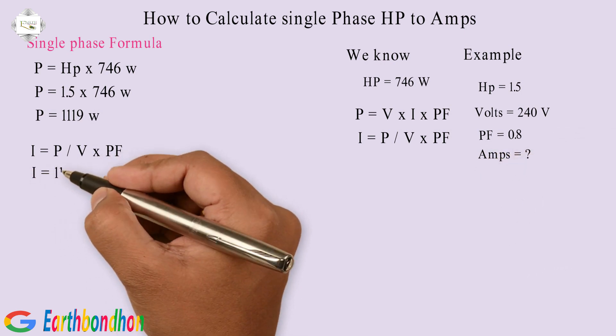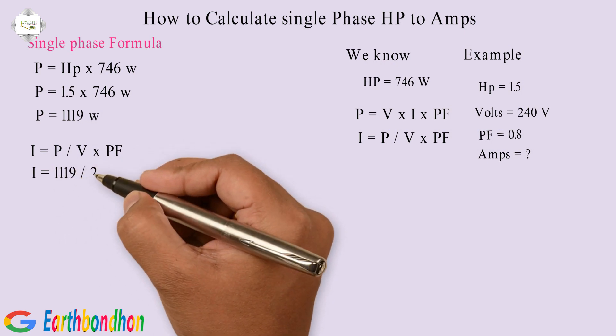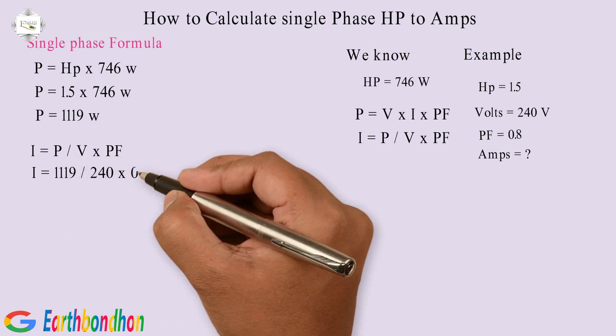Amps equals 1119 division 240 multiplication 0.8.